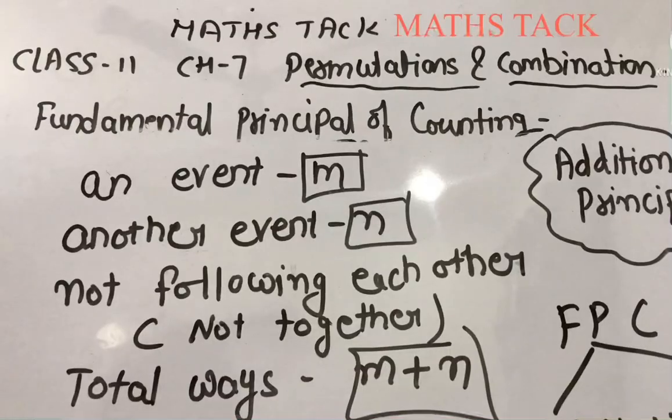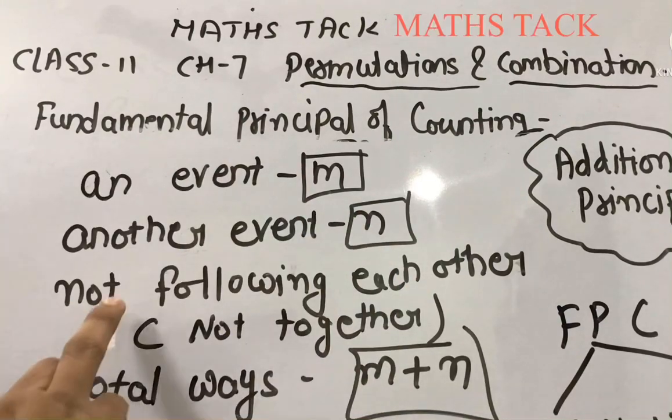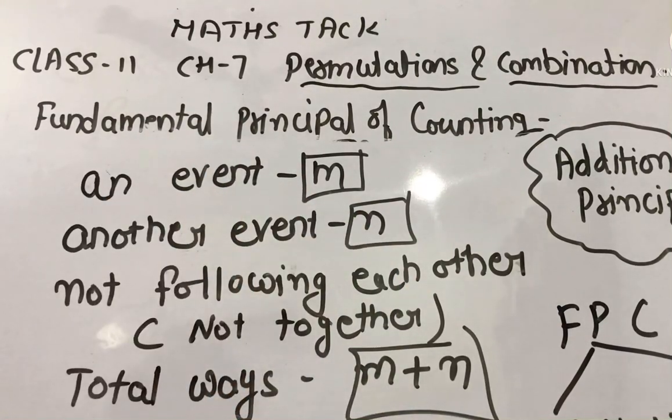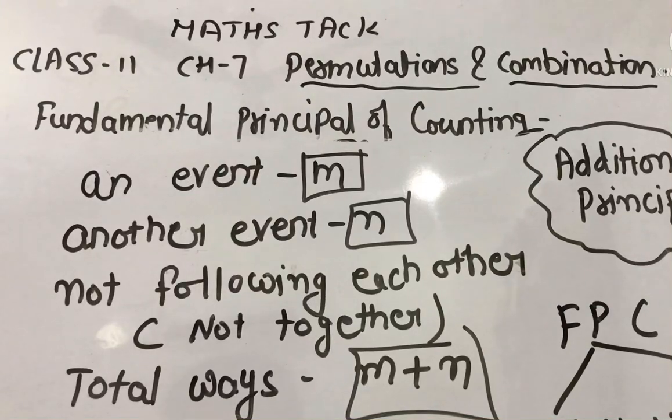Now we will discuss the addition principle. If an event can occur in m different ways and another event can occur in n different ways, but they are not following each other—they are not occurring together—then the total number of occurrences of the events will be m+n. This is called the addition principle.